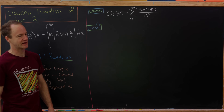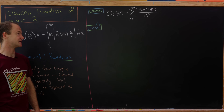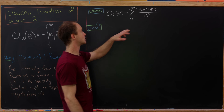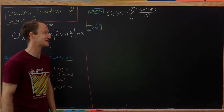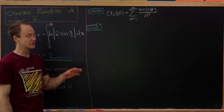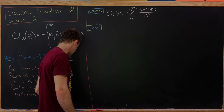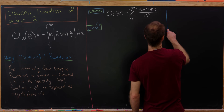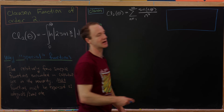Let's start with the following claim, which is essentially the Fourier series representation of this Clausen function. It is in fact equal to the sum as n goes from 1 to infinity of sine(nθ) over n squared. We'll derive this, and as a consequence we'll get a nice integral identity.